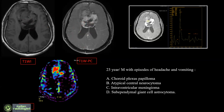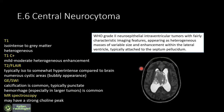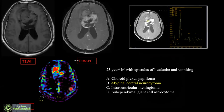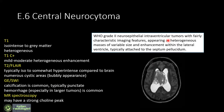Most of you correctly identified this as a typical central neurocytoma. These are WHO grade 2 neuroepithelial intraventricular tumors with fairly characteristic imaging features: heterogeneous appearance, heterogeneous post-contrast enhancement, calcification is common and can be typically punctate. MR spectroscopy shows a tall choline peak as a characteristic feature.